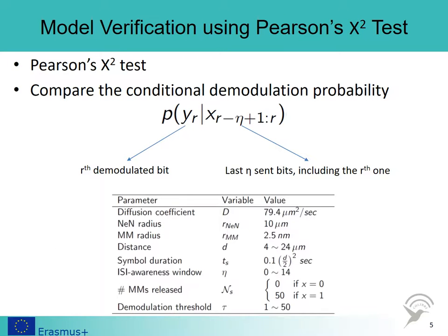Model verification by presenting graphs with overlapping simulation and model results is not rigorous enough. For verifying the model we have just presented, we want to compare the conditional demodulation probabilities obtained from simulations with those derived from our proposed model under every possible parameter combination. Here, Y sub R is the R-th demodulated bit at the receiver node and X sub R minus eta plus 1 through R are the last eta sent bits including the R-th one at the transmitter node. For model verification, we use Pearson's chi-square test. The model is tested with extensive simulations under realistic conditions.